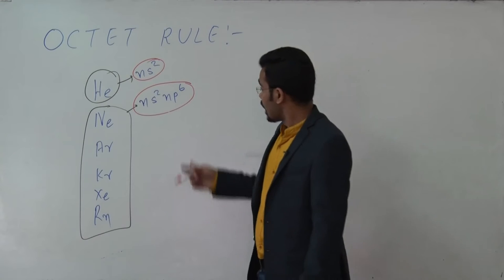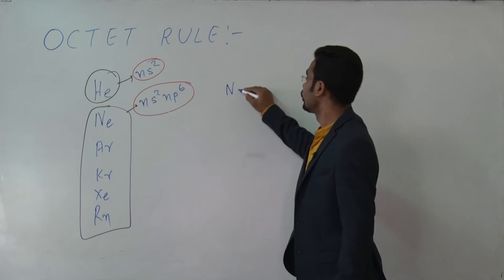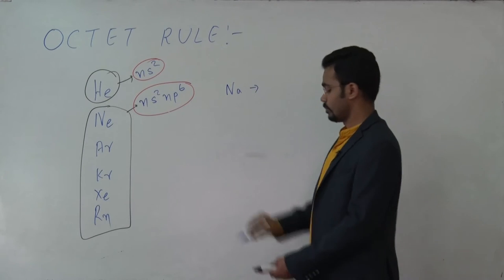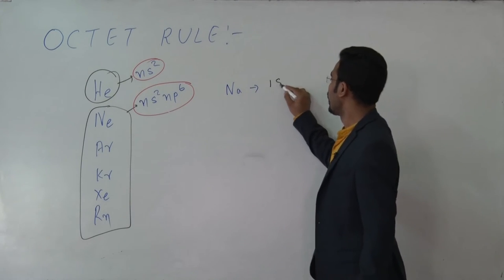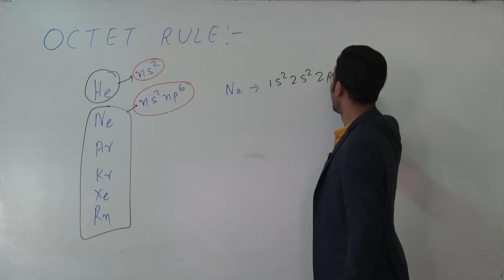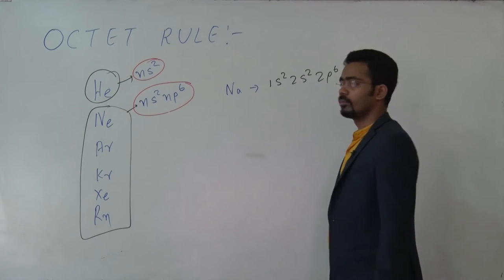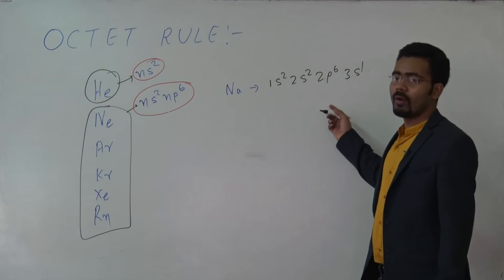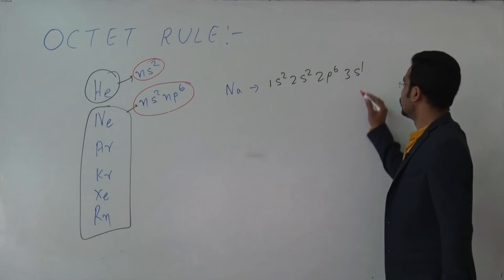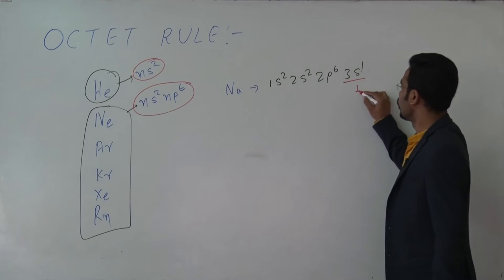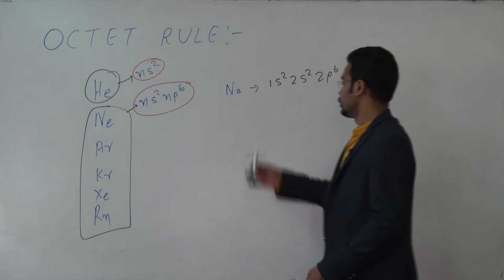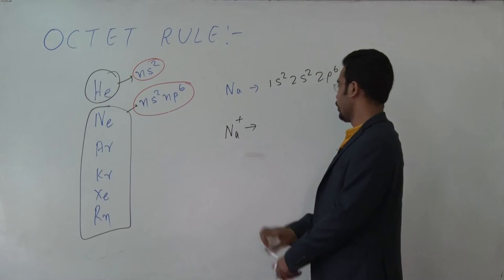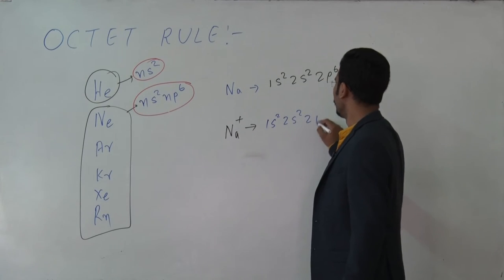For example, consider sodium, which has one valence electron. The electronic configuration of sodium is 1s², 2s², 2p⁶, 3s¹. So if sodium loses one electron, what will form? The sodium has one valence electron, and when sodium loses one electron, it forms sodium⁺ with configuration 1s², 2s², 2p⁶.